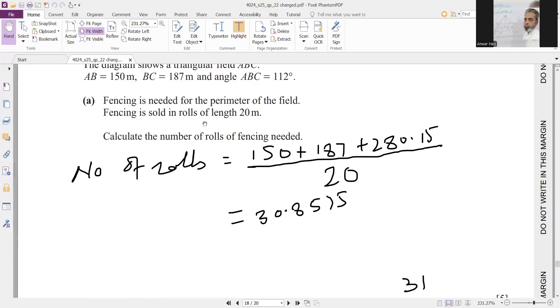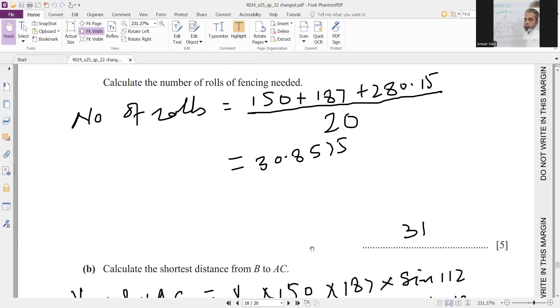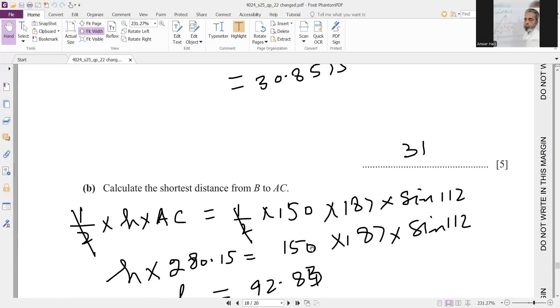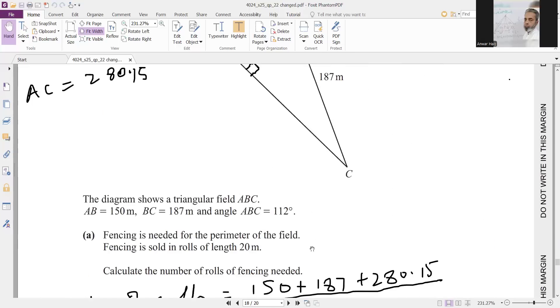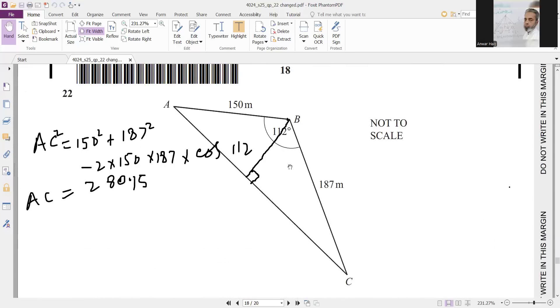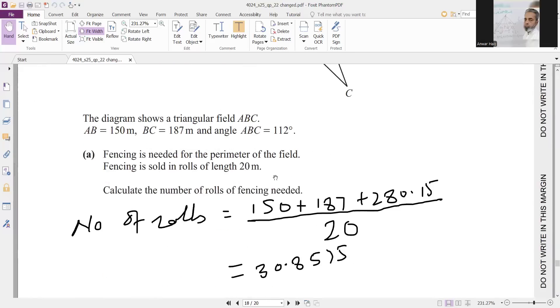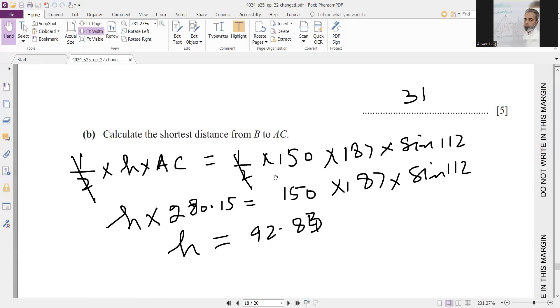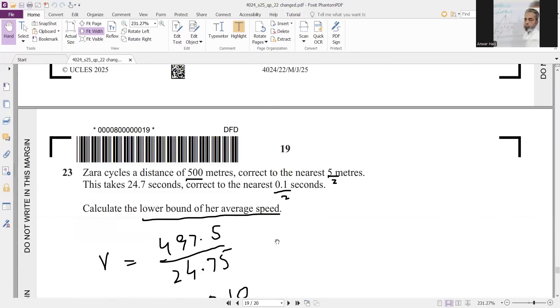Then number of rolls required. The length of one roll is 20, so add up all these values divided by 20, you will get 31 rolls. Calculate the shortest distance. The shortest distance from B to AC is the perpendicular distance from B to AC, this one. Using the formula for area of the triangle, the area of triangle ABC when height is required, this is 1 over 2 multiply by height multiply by base AC. For the other side when height is not required, you will use 1 over 2 multiply 150 multiply 187 multiply sin 112. So your height will become 92.83 or 93.